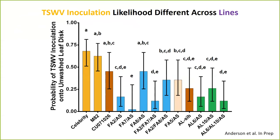We did the same thing for tospovirus inoculation, except this time the thrips were infected with TSWV and we did ELISA at the end to count the incidence of infection. We see a very similar trend where fatty acid 7 and acyl sugar 610 are again among the best performing lines. But importantly, there's quite a bit more additional variation in this experiment. Part of that is due to differences in the number of replicates, but I also hypothesize that the number of inputs that go into the decision behind oviposition may be greater than for feeding, because there are real ramifications for the survival of your offspring in deciding where to put your eggs as opposed to where to feed.